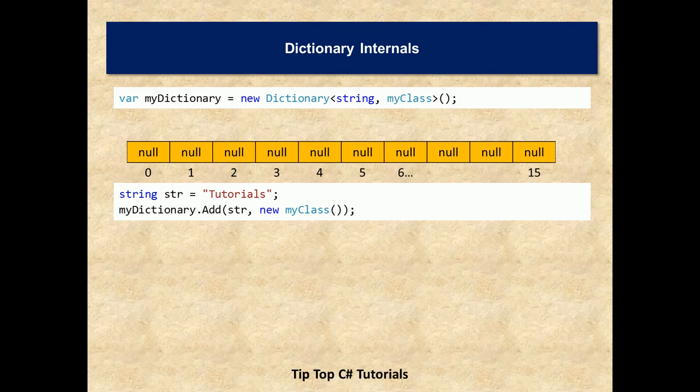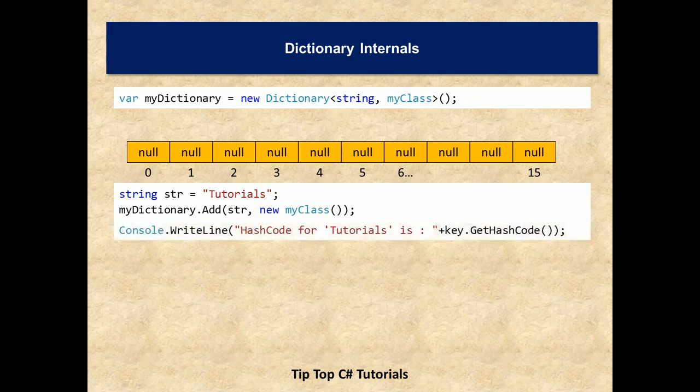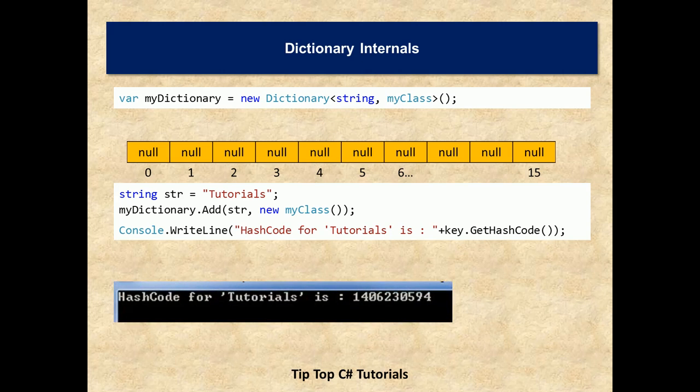Imagine that we are adding an item where the key is tutorial and we try to get a hash code. As you know that object class provides a method called get hash code. For each value we can try to get a hash code. We are adding an item in the dictionary, the key value pair. The key is tutorial and value is my class which is a dummy object which I am adding. As you can see, hash code for tutorials is printed in console as below. The value is 1406 something. Let us see how to calculate an index for the specific hash code.